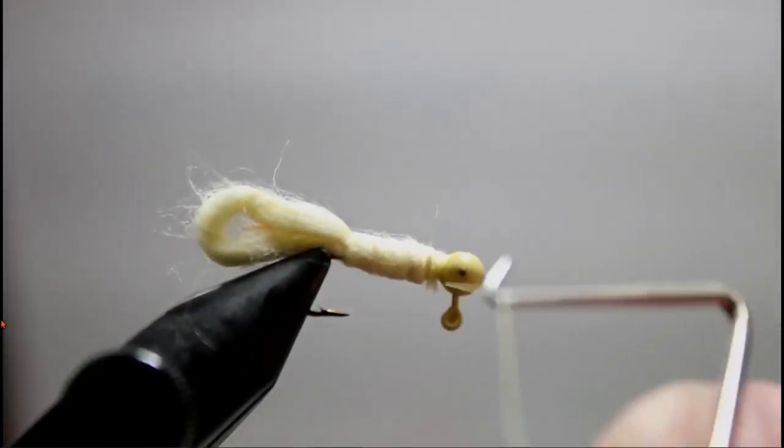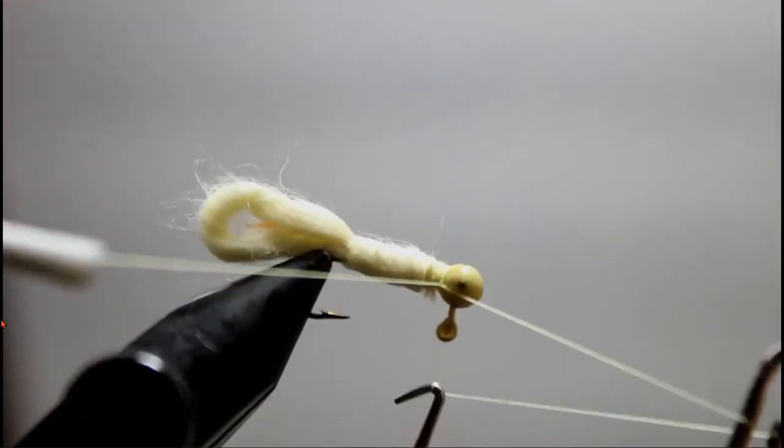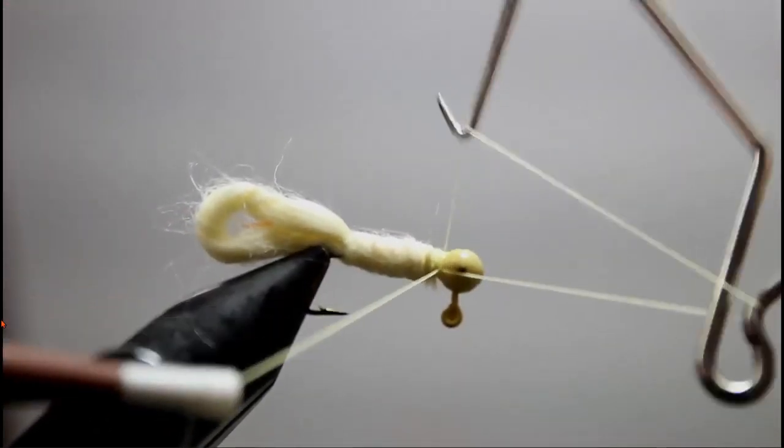Grab your whip finish tool and here Terry takes two four-turn whip finishes, he seats the knots well, then snips the thread off close.